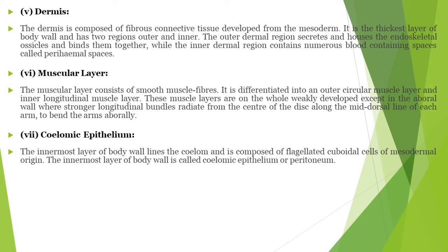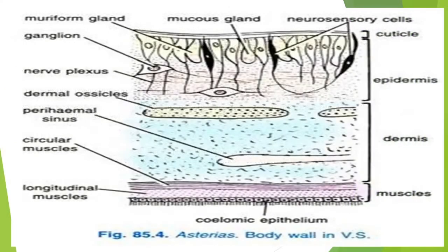Muscle cells form the innermost layer of the body wall and are composed of flagellated cuboidal cells of mesodermal origin. The innermost layer of the body is called the coelomic epithelium or peritoneum. In the diagram, you can see mucus glands, cuticle, epidermis, and dermis and muscle layers clearly present.